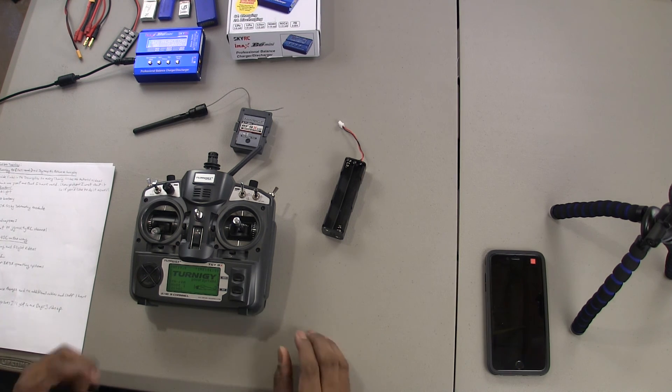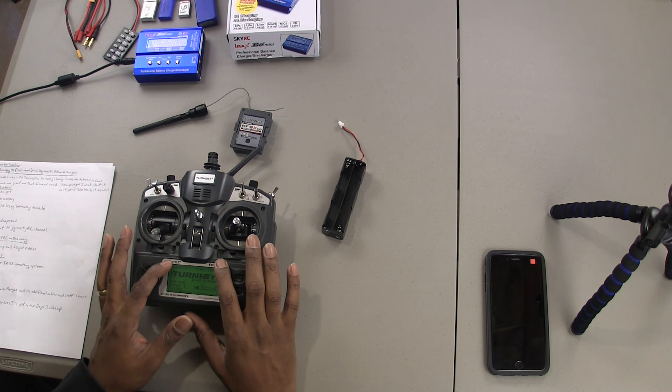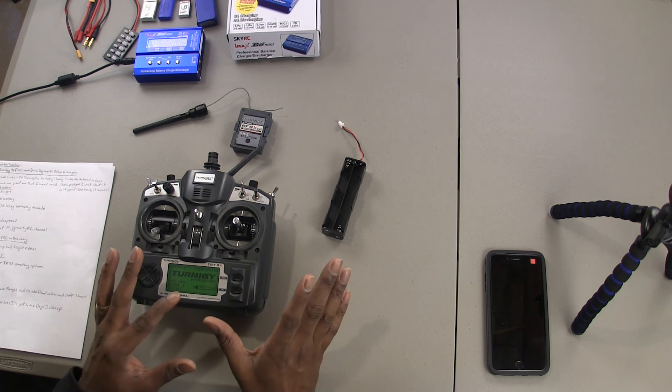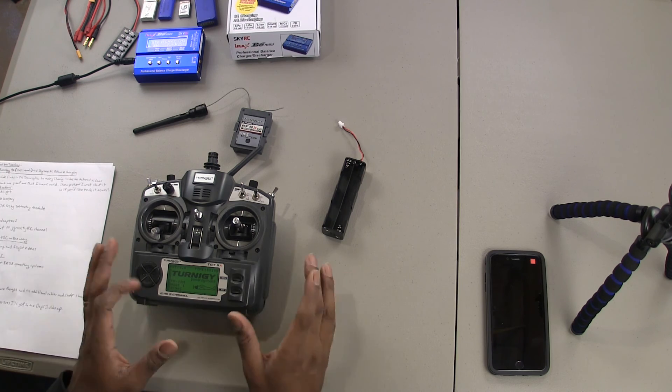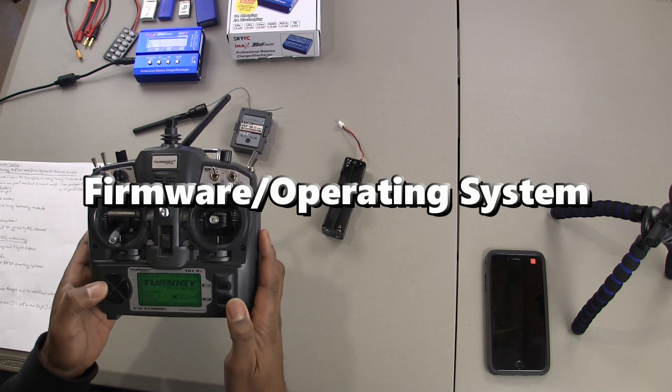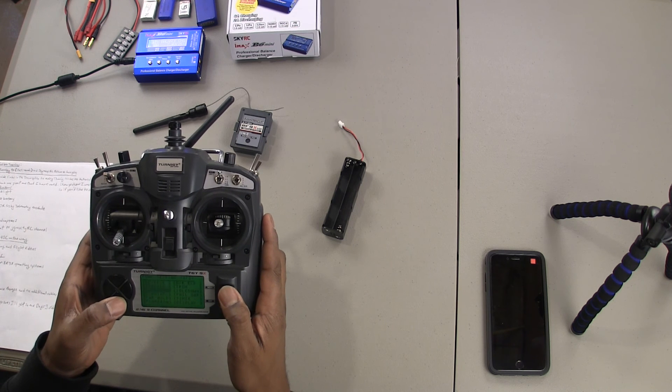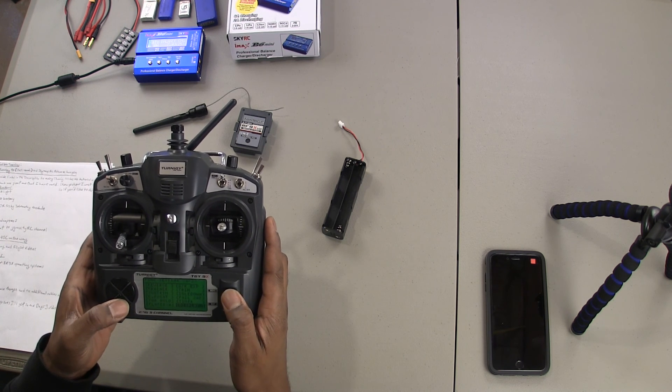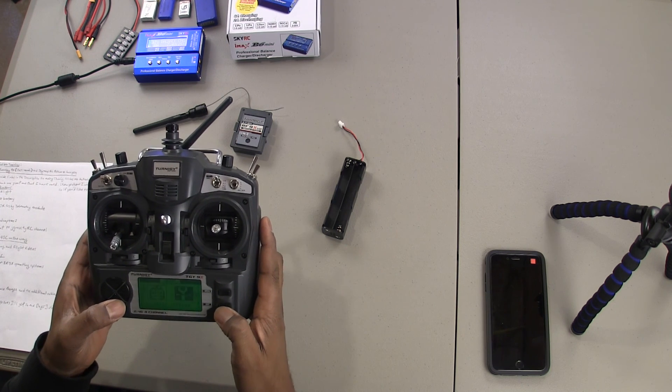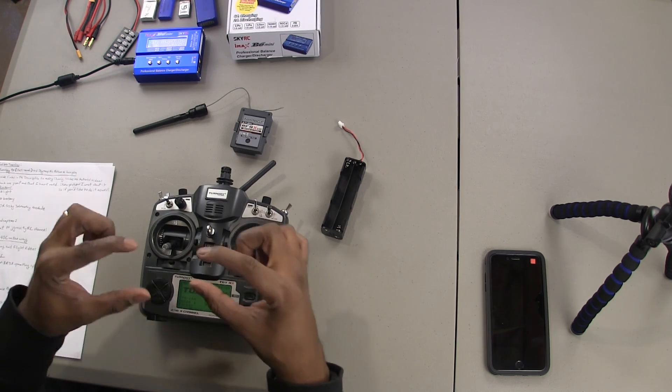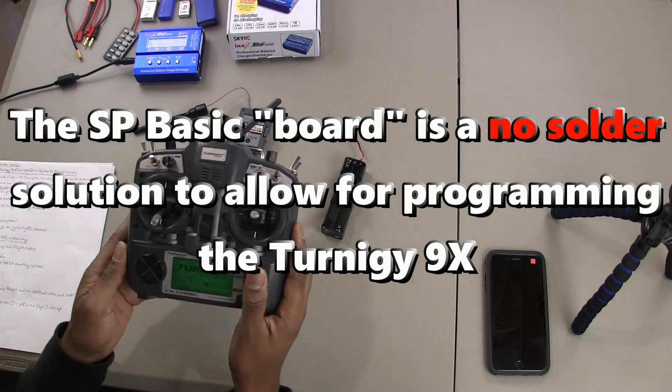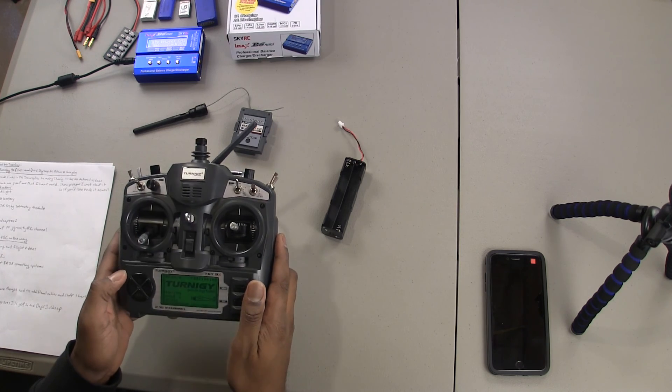And then the other thing, hopefully by next week I have a board coming that will allow me to flash the operating system in the 9X to either Open9X or OpenTX, it's called ER9X. It's just going to change the operating system. The stock operating system is not very intuitive at all. It's just not easy to use and you hear that incessant beeping, you can't turn that off. It just doesn't give you a whole lot of options. So we're going to change that. But you need a board because the Turnigy 9X does not come with a USB port or a port that allows you to connect to your PC.